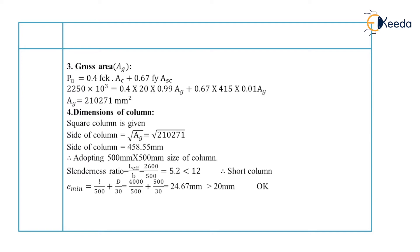Then we will check for the minimum eccentricity. And E minimum is equal to L by 500 plus D by 30 which is equal to 24.67 and it is greater than 20 mm therefore okay. Then there is another condition that E minimum by D is equal to 24.67 upon 500 which is equal to 0.049 and it is less than 0.05. That means all the conditions are satisfied and hence we can design the column as axially loaded column.